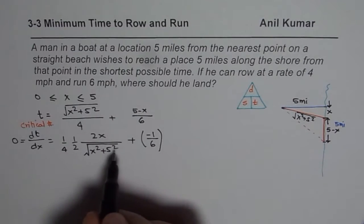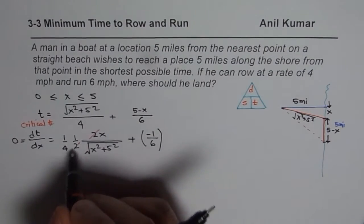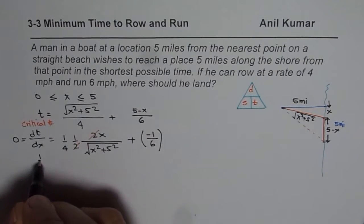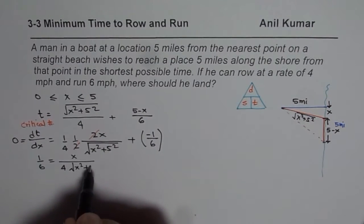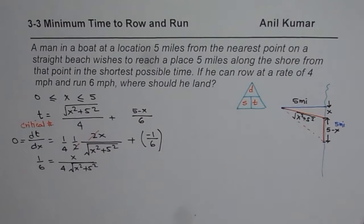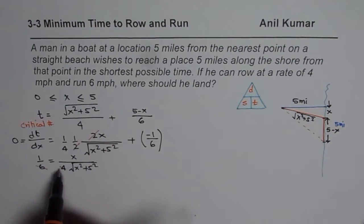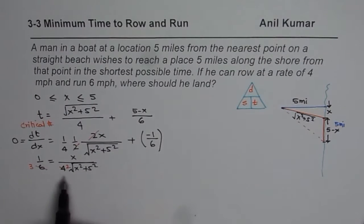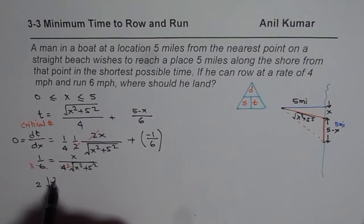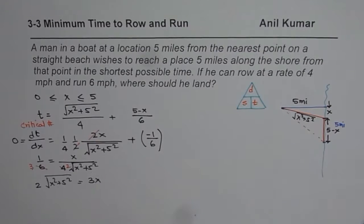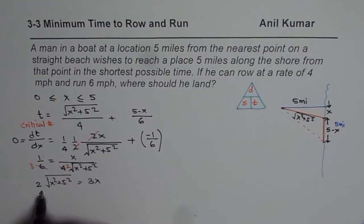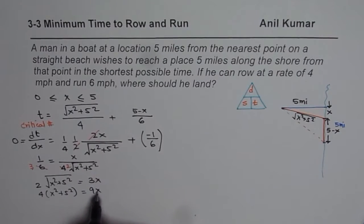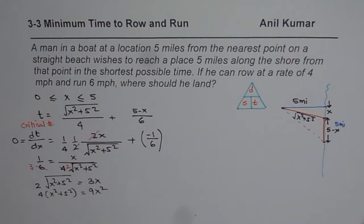Setting the derivative to zero means we need to simplify this equation. Bringing 1/6 to the other side: 1/6 = x / [4√(x² + 25)]. We can divide both sides by 2, giving 1/3 on the left and x / [2√(x² + 25)] on the right — wait, simplifying: we get 2√(x² + 25) = 3x. Squaring both sides gives 4(x² + 25) = 9x².